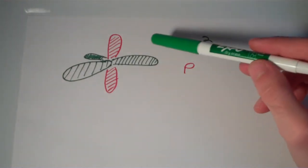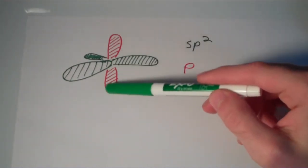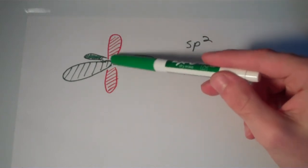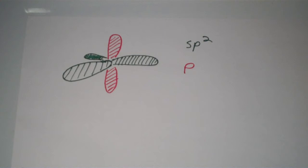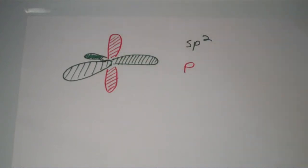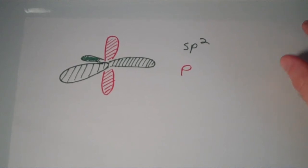And then you have this whole thing here, this whole red thing, is a single p orbital. So this is the unhybridized p orbital, because there's three p orbitals total. Two of them combined with the s orbital to make the sp² hybrids. One of them is still unhybridized. And that turns out to be very important for the purposes of bonding.